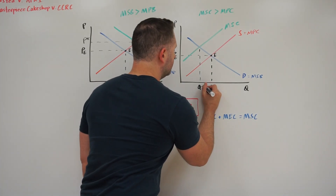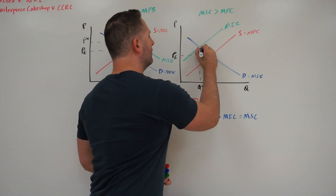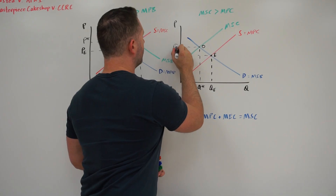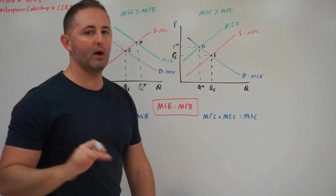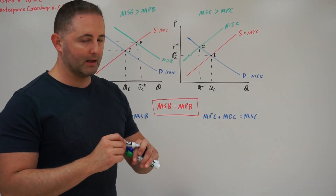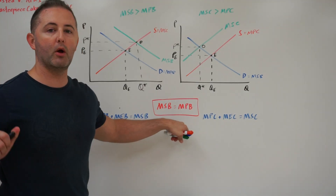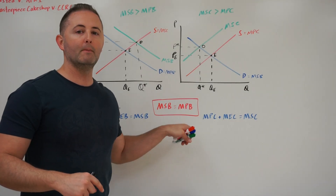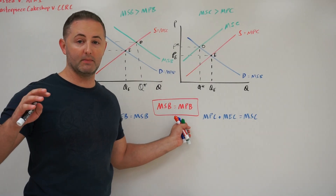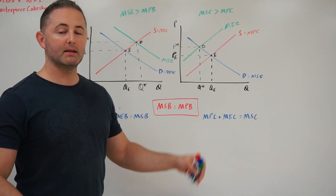So we actually need to decrease the quantity being produced. Q star is going to be the optimal quantity. The principle comes back to: we really only want to produce to the point where the marginal social benefit is equal to the marginal social cost. Because that means we've taken into account all costs and benefits — not just to the people directly involved in the transaction, but society as a whole.